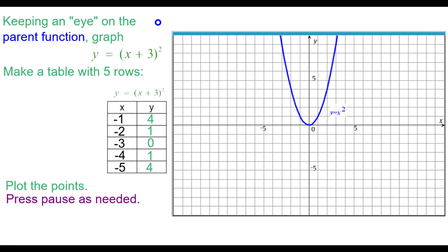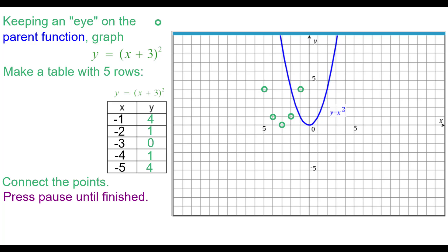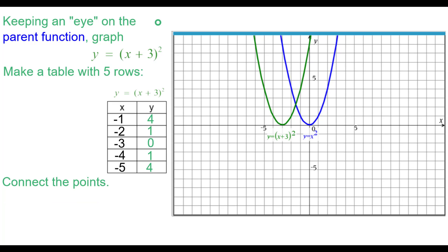Go ahead and plot those points. Those are the five points plotted. We'll connect the points and we get the graph of y equals the quantity of x plus 3, squared, in green.